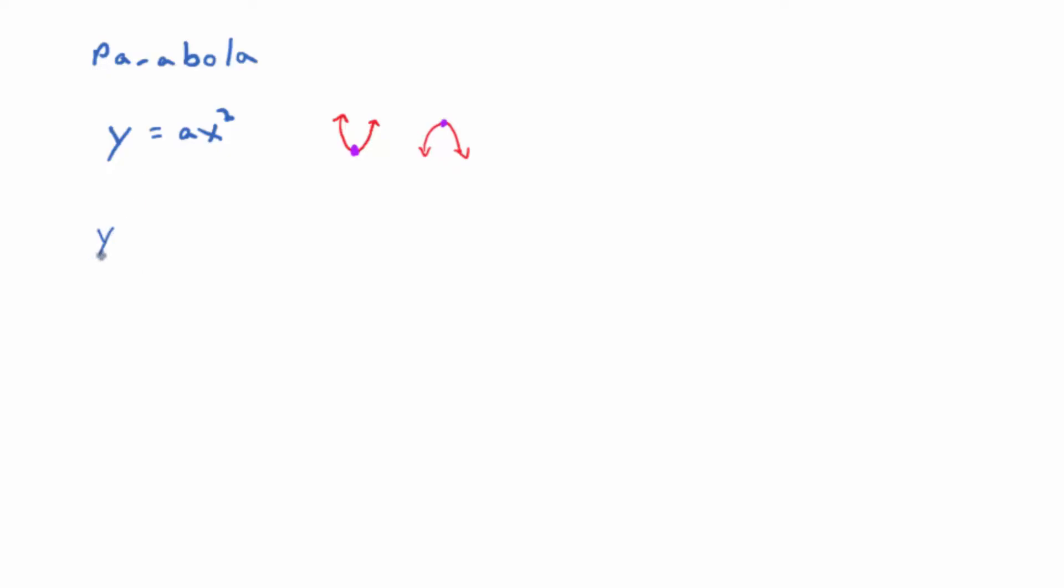The other version, though, is x equals a times y squared. And if that's the case, it opens sideways, right? Either to the right if a is positive or to the left if a is negative. Using a traditional xy plane, that is. You all know about the parabola, how to graph a parabola.